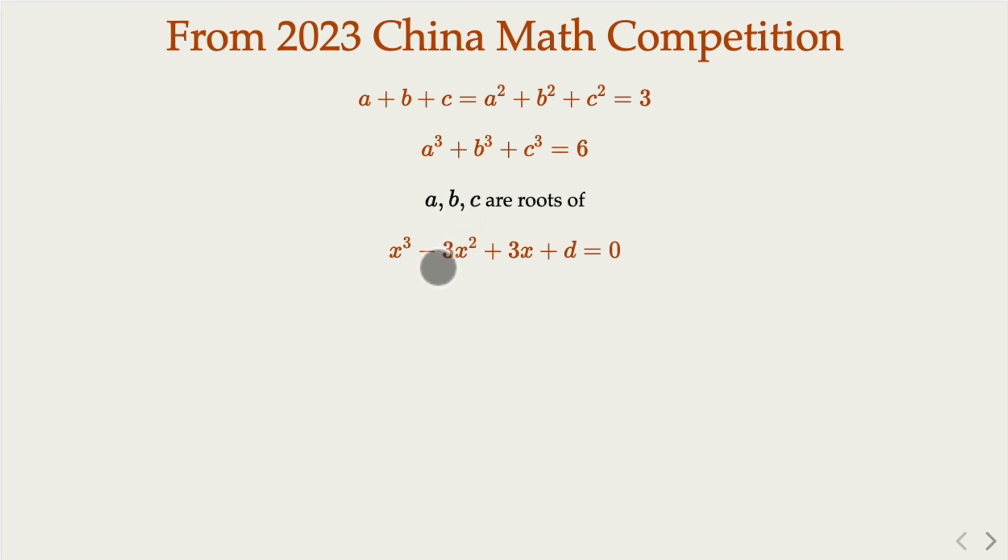So ABC has three roots. We just plug them in. We have three equations, you add them up. What you're going to get is this. Now, here you plug in the value. This whole thing is 6 minus 3 times 3 plus 3 times 3. These two terms cancel each other, and this is 3D. So you end up with 6 plus 3D equals 0. D is negative 2, all right?